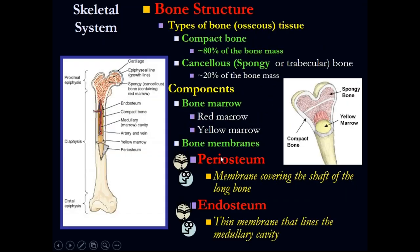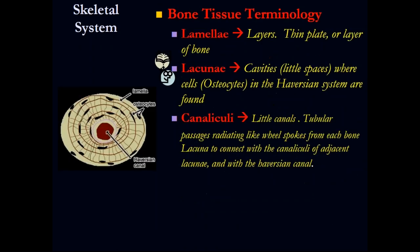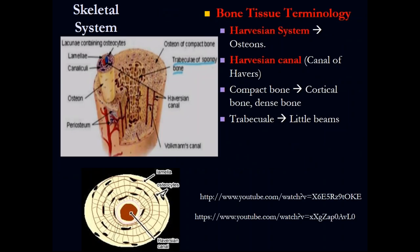The periosteum is the membrane covering the outside of the bone. The endosteum is the membrane lining the medullary canal. The functional unit of the bone is the osteon, also called the Haversian system — they are the same thing.